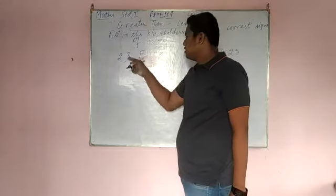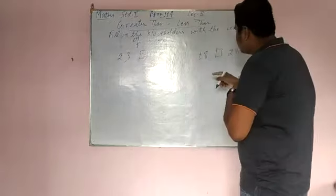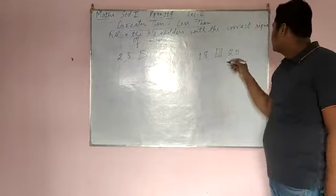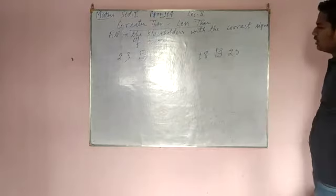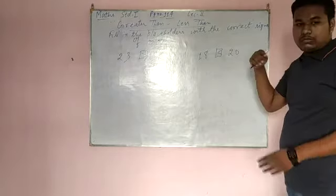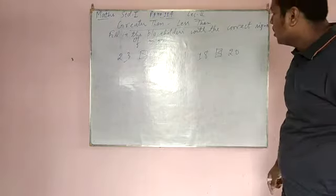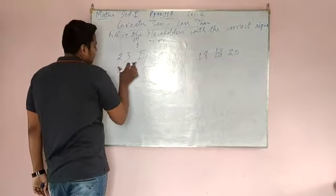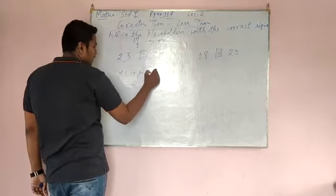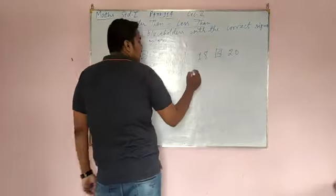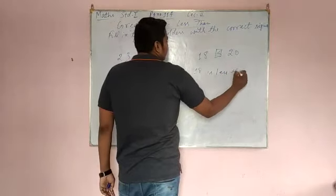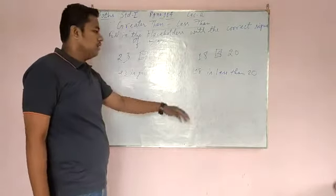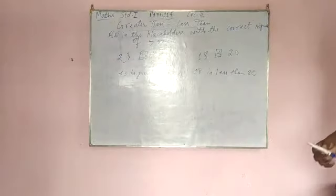So you will give the sign this way — the greater sign goes along 23. And here, 18 or 20: 20 is greater on this side. So you will give the greater sign this side. Whenever you find the number which is on the greater side, you give the sign that way. So here it says: 23 is greater than 20, and 18 is less than 20.